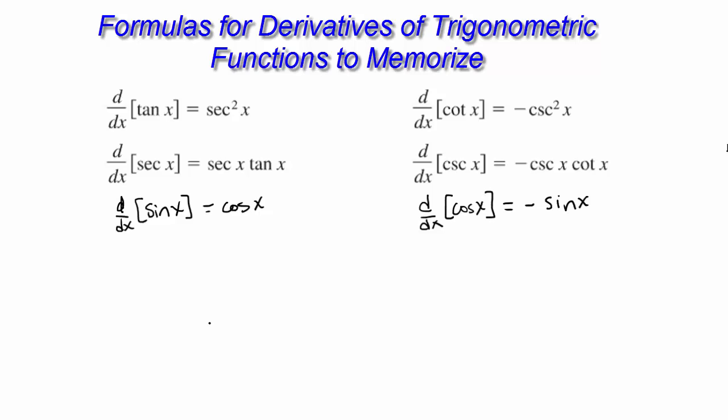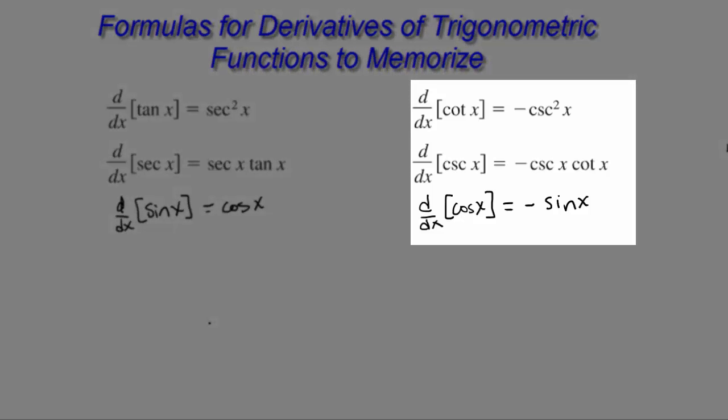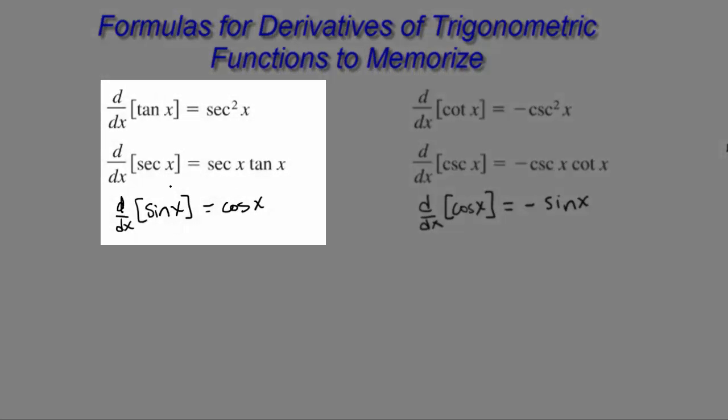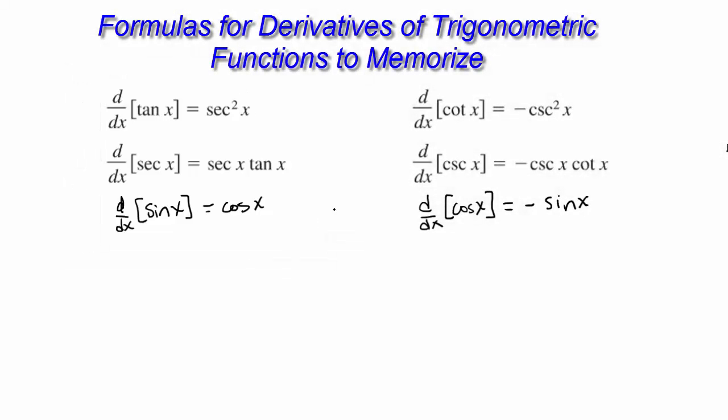Notice one thing to help you memorize these is that all of the cofunction derivatives are negative. Cotangent, cosecant, and cosine all have negative derivatives. Whereas tangent, secant, and sine that do not have the co, they all have positive derivatives. So that will just help you to remember cofunctions have negative derivatives.